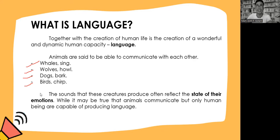You might say that parrots can communicate, but parrots only imitate what you say. If you say to a parrot 'guwapa ko,' the parrot will repeat it, but it doesn't understand what it's saying — it only imitates. So parrots are not capable of producing language; they don't comprehend what they imitate or say. Again, animals are able to communicate with each other only because of the state of their emotions.